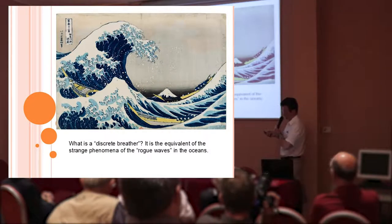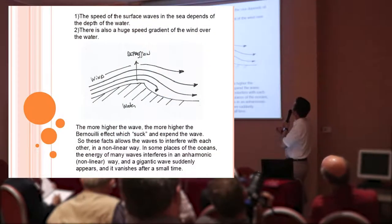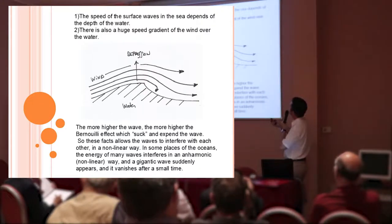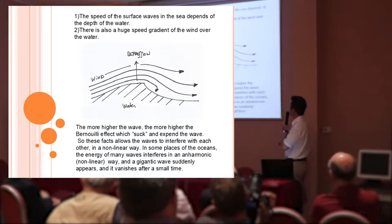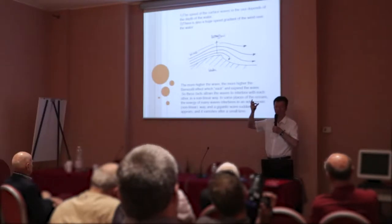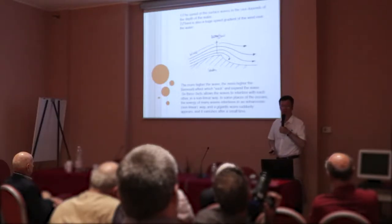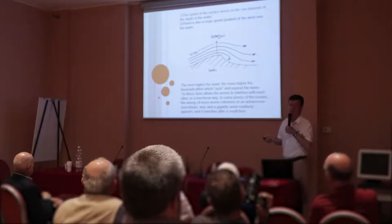What is a discrete breather? It is the equivalent of a strange phenomena of a rogue wave in the ocean. The speed of the surface wave in the sea depends on the depth of the water. There is also a huge speed gradient of the wind over the water. So the wind and the Bernoulli effect increase the size of the wave. In some place of the ocean, suddenly, many waves from many directions interfere constructively in a highly non-linear, highly harmonic wave. And suddenly, we observe a giant wave, which is able to cut a tanker in two, and it disappears rapidly. It is the equivalent of the breather in the ocean.